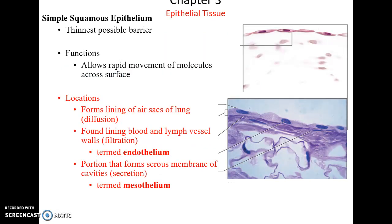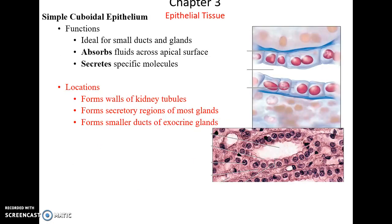Simple squamous epithelial tissue is the thinnest — a single layer of flat cells. It allows for the rapid movement of materials across it. It forms the lining of the air sacs in the lungs, the lining of blood vessels, and some serous membranes. Simple cuboidal epithelial tissue is cube-shaped, one layer only. It can absorb or secrete materials and is found in the walls of kidney tubules, secretory regions of many glands, and ducts of some glands.